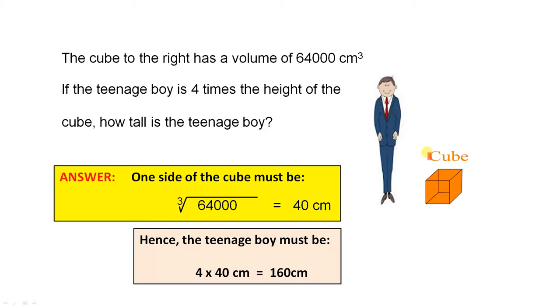Here is the cube to the right, which has a volume of 64,000 cubic centimeters. This boy is four times the height of the cube. So there's the height of the cube there, just from there to there. And this boy is four times that height.